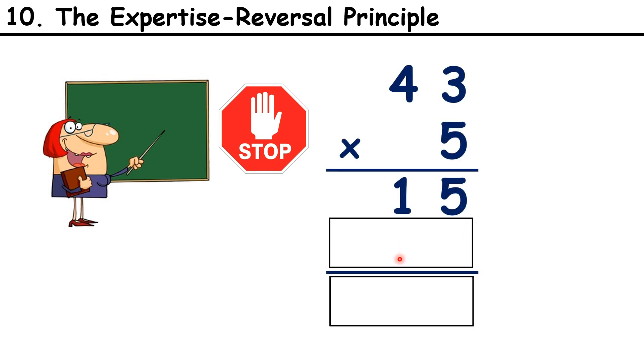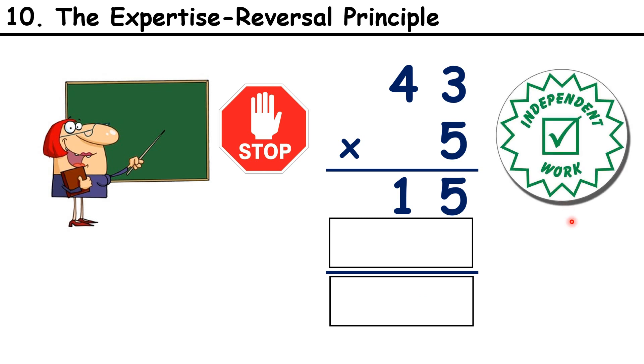So start by omitting some of the steps from a worked example, and then move on to giving children something to complete independently. This principle relates to a finding in the wider field of the psychology of learning called the testing effect. Once children are able to do something, it's more effective to give them a test or an opportunity to practice than it is to re-explain the material to them.